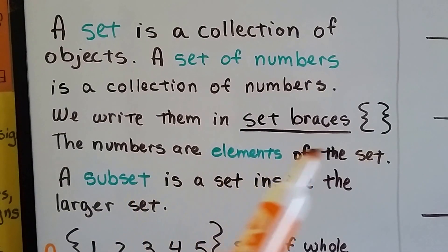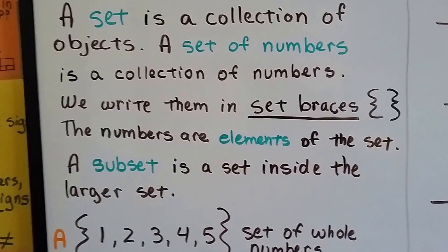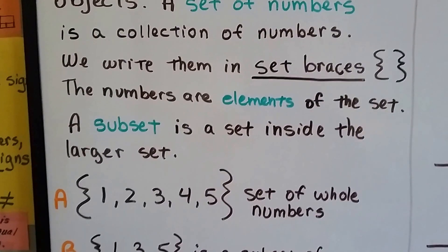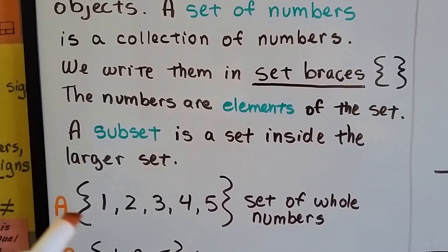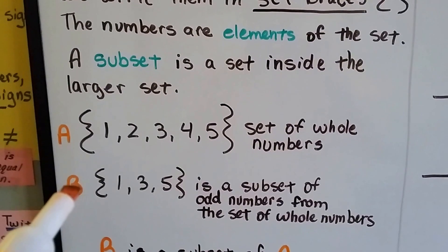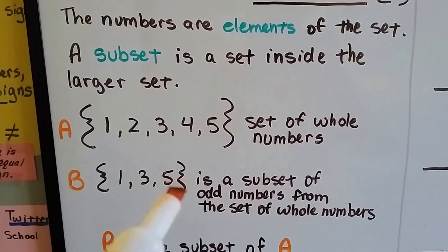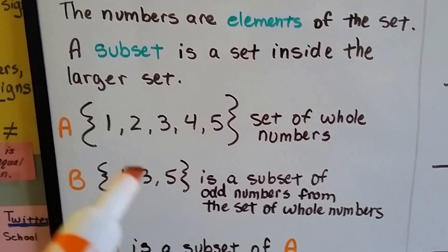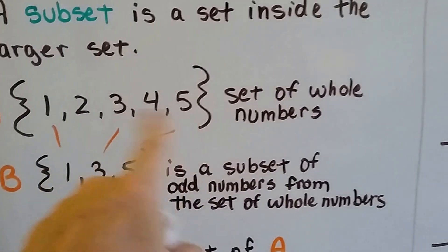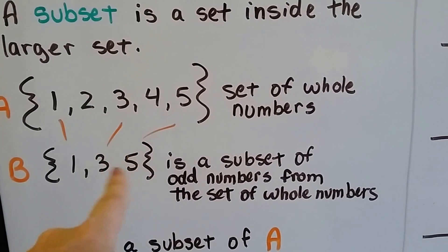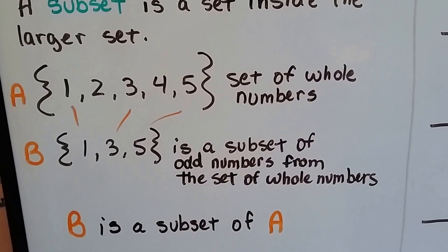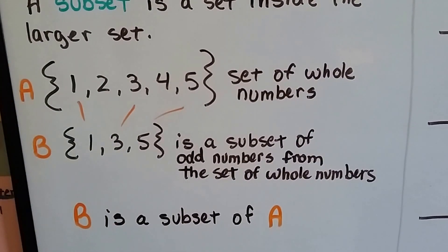The numbers are elements inside the set. A subset is a set inside the larger set. So let's say we have Set A: 1, 2, 3, 4, 5 — a set of whole numbers. Set B is 1, 3, and 5. Set B is a subset of Set A because those numbers are all in the larger set. It's a smaller set of odd numbers taken from the set of whole numbers, so B is a subset of A.